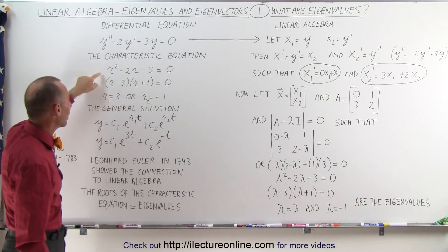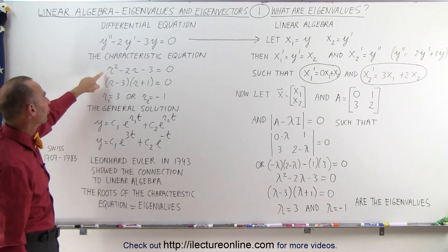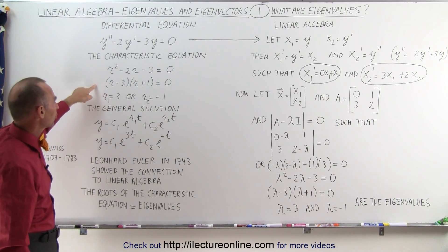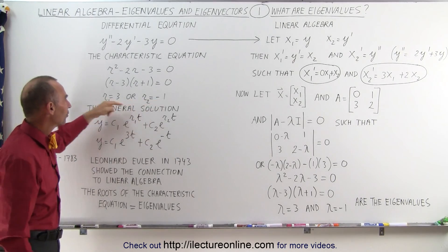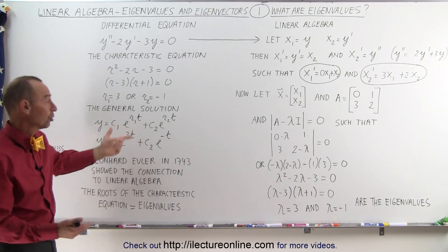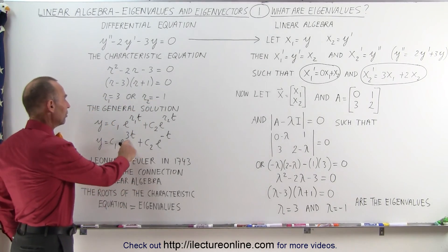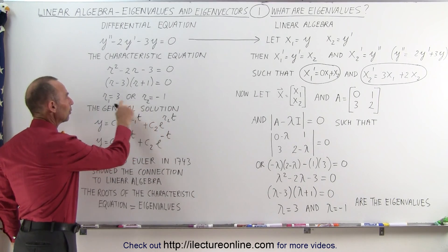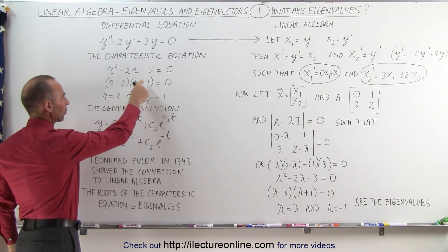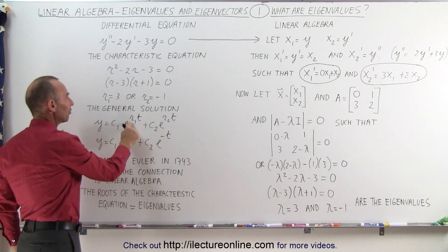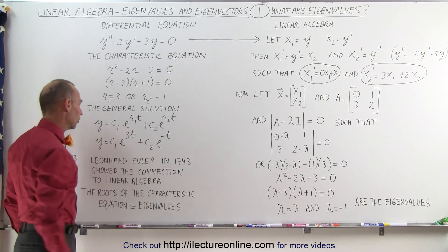When we solve for the r in the characteristic equation, those values then become part of the general solution, which is written like this. Notice that r₁ and r₂, which are the solutions to the characteristic equation, become the coefficients in the exponents of the general solution.